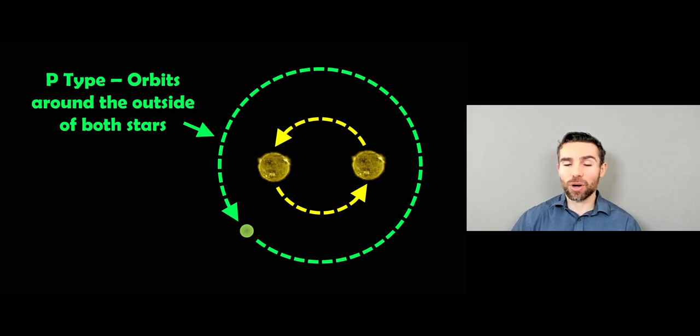So the first one is a P-type. In this particular orbit, the planet would orbit around the outside of the two stars. So the two stars are orbiting a common center of mass. They're kind of orbiting almost themselves. And then the planet orbits around the outside. So this would be known as a true circumbinary orbit because it's going around the outside of the two stars.